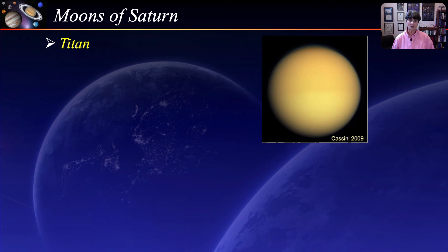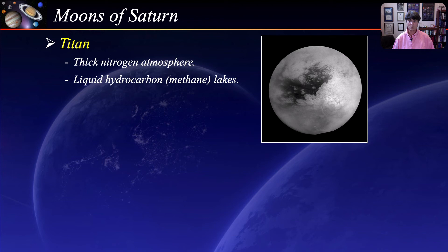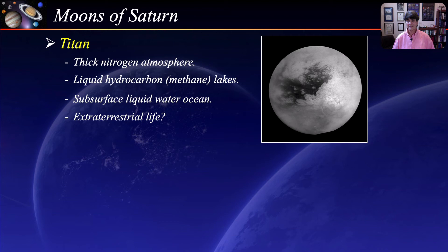Titan has a very thick nitrogen-methane atmosphere similar to that of primordial Earth, making it very interesting. One of the most interesting discoveries of the Cassini-Huygens mission is that Titan has liquid hydrocarbon lakes near its polar regions, making it the only other body in the solar system with surface liquid. It is also thought that Titan has a subsurface ocean of liquid water. Because of the surface liquid and the subsurface ocean, Titan is thought to be a possible host for microbial extraterrestrial life.